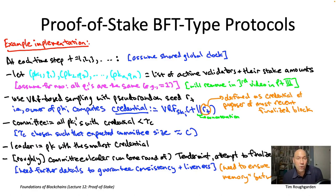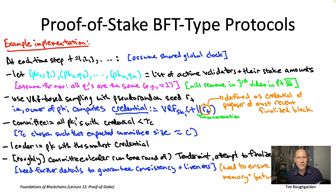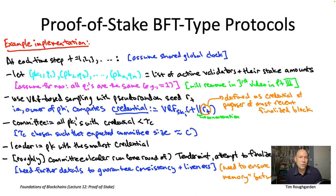This video is the third and final one about the details of coupling proof of stake Sybil resistance together with BFT-type consensus. In both of our first two videos, we had the standing assumption—which is quite unsatisfying—that all active validators in the staking contract had exactly the same stake amounts. Now let's talk about the protocol in the more general case where validators have arbitrary stake amounts, arbitrary Q sub i's.